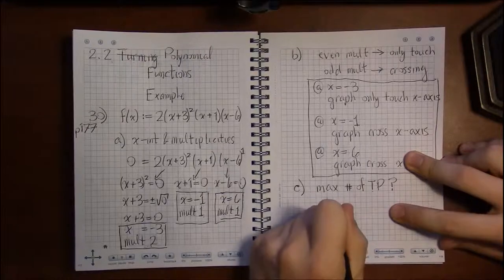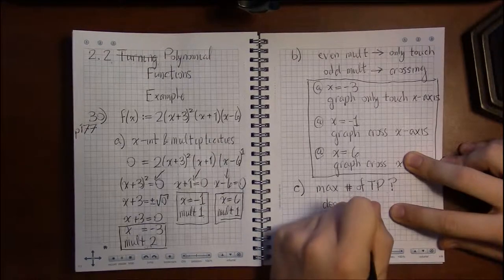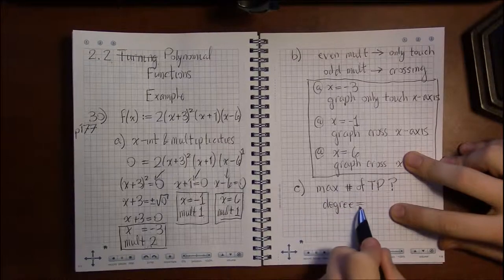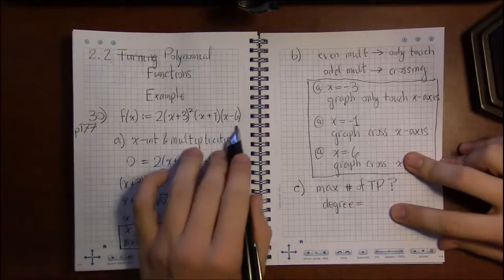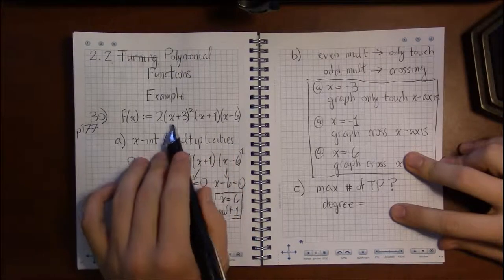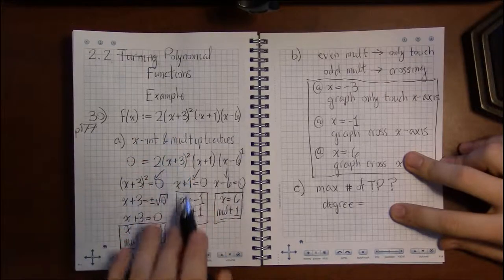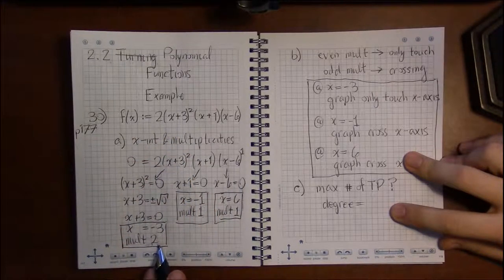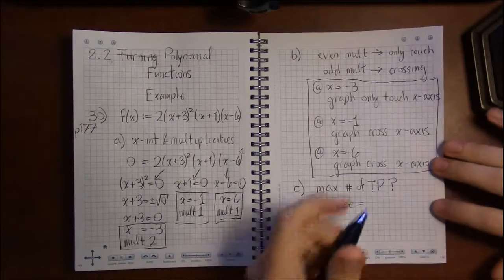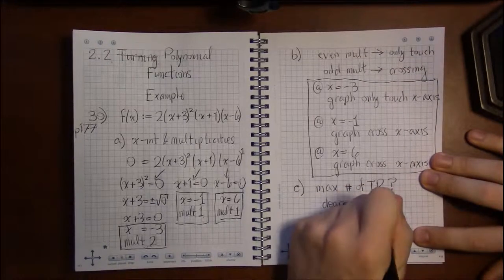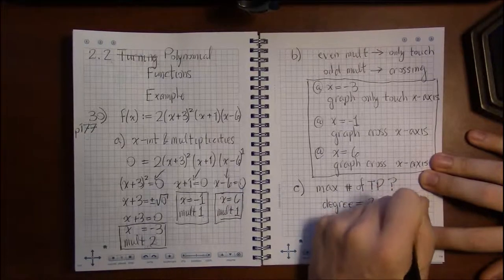So the maximum number of turning points, that's related to the degree. So we need to find the degree of this polynomial in order to answer the question. And the degree of the polynomial, it's not in the right form. It's not multiplied out. It's factored. To easily find the degree we'd have to have it multiplied out. But the other way we can find the degree is by going through and adding up all the multiplicities.